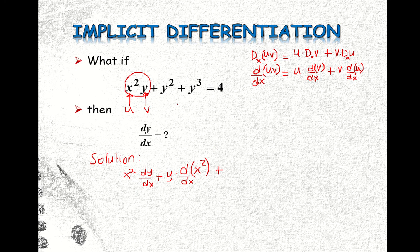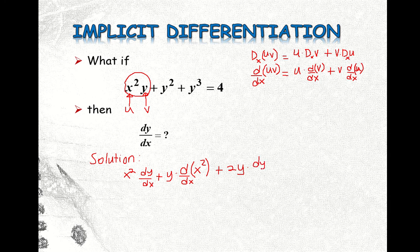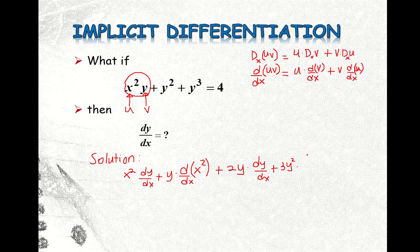Then plus the second term — we have 2 times the power formula: 2 times y times the derivative of y with respect to x. Then plus, using the power rule again, 3y² times the derivative of y with respect to x. Then the derivative of the constant on the right side — our constant is 4 — so the derivative of 4 with respect to x is equal to 0.